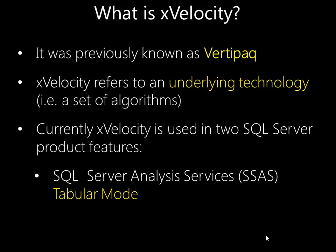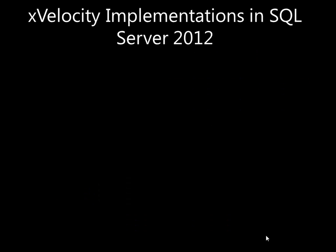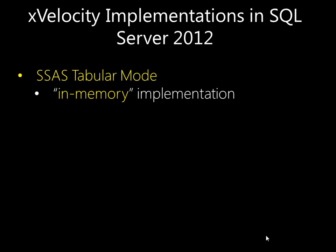The first of these is the SQL Server Analysis Services tabular mode. You may also know this as PowerPivot — either PowerPivot for SharePoint, PowerPivot for Excel, or with SQL Server 2012, the tabular mode of BISM models. And the second feature is the column store index. The tabular mode within Analysis Services uses X-Velocity for an in-memory implementation.